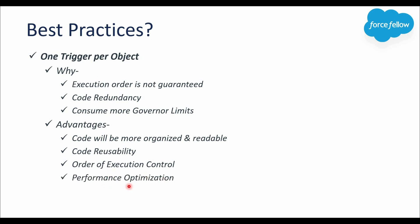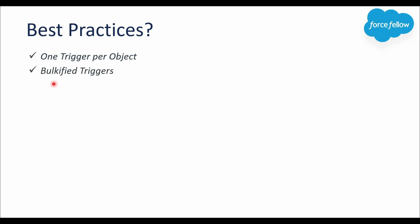The next best practice is to always write bulkified triggers. Bulkified means instead of processing records individually, we write code so that multiple records can be processed at a time. Triggers are bulkified by nature — when we insert 500 account records, the trigger gets called in batches because it can process 200 records at a time. We should always consider this when writing trigger code.